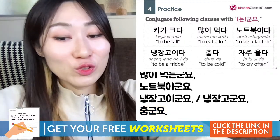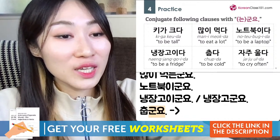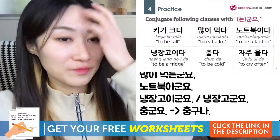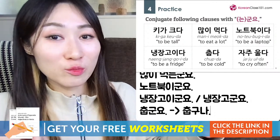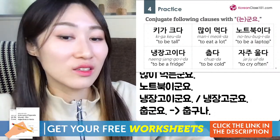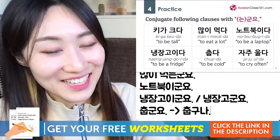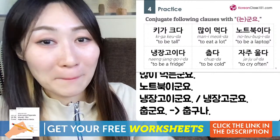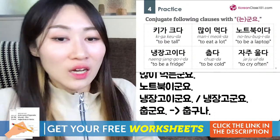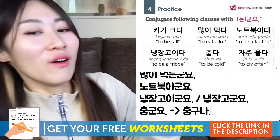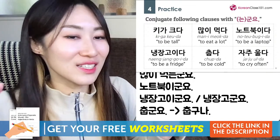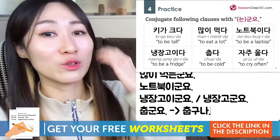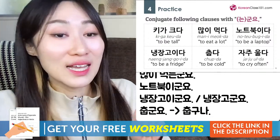If you want to say it casually, replace 군요 with 구나: 춥구나. For example: I tell you Korea is now minus 17 or minus 20 degrees below zero — super cold! And you say 한국은 춥구나 — 'I see, I just learned that Korea is very cold now.' 춥구나 is the casual way to say it.